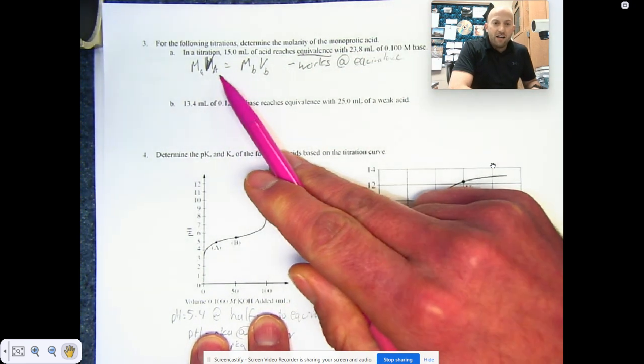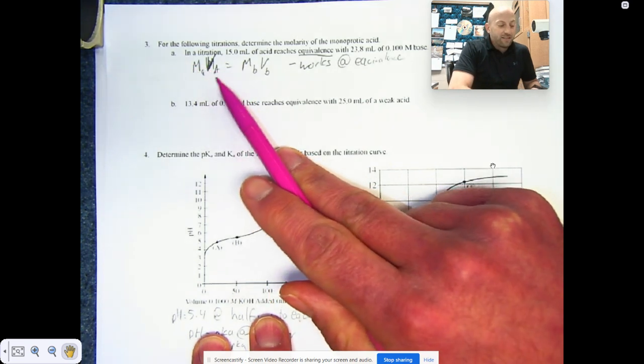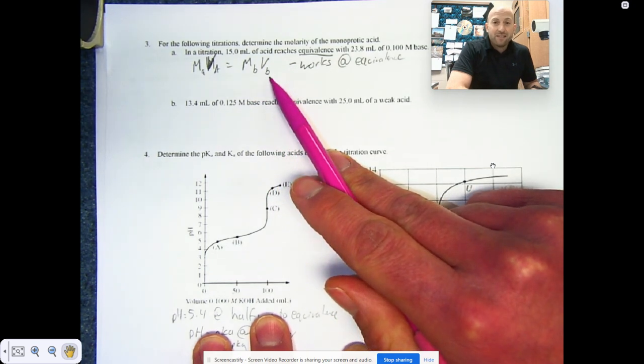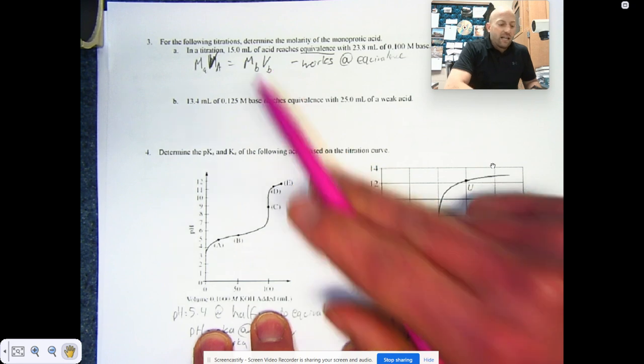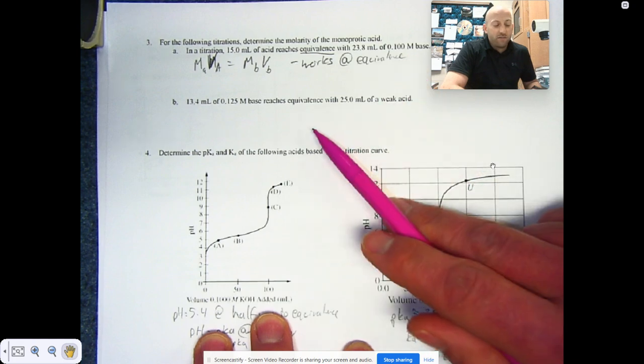So at this, remember at the equivalence point we have our MaVa, or molarity of acid times volume of acid, is equal to your molarity of base times volume of base. Basically, the number of moles of acid equal to the number of moles of base. It works at the equivalence point.